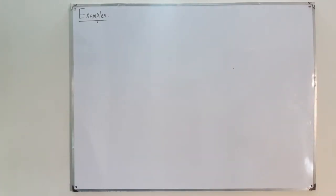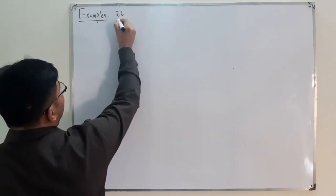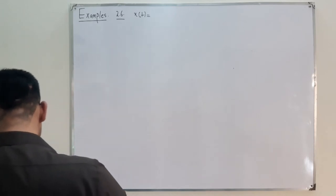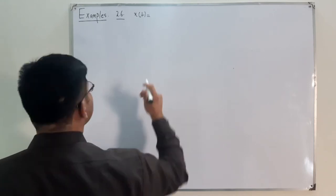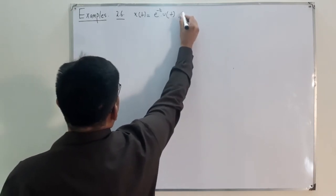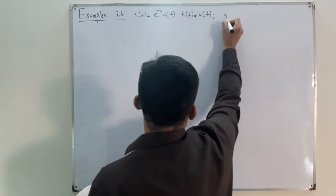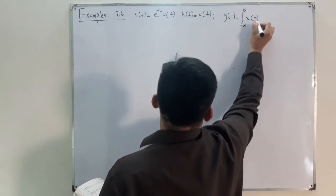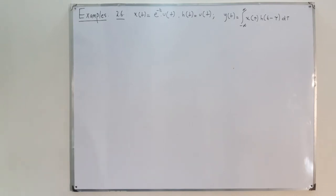Now let's do example 2.6 from the book. In this example, x(t) = e^(-at) · u(t), and the impulse response is h(t) = u(t). We want to find y(t), which is given by the convolution integral.